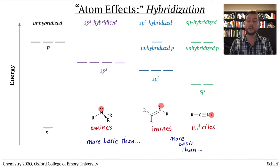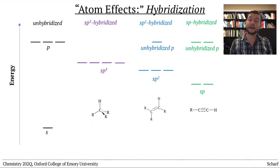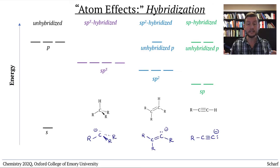This trend also explains why terminal alkynes are more acidic than alkenes, which are more acidic than alkanes. Their conjugate bases have lone pairs in SP, SP2, and SP3 orbitals. Lower energy lone pairs in conjugate bases mean stronger conjugate acids.